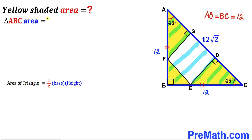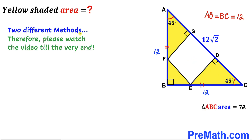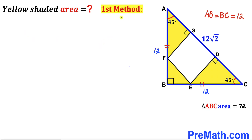So the area of triangle ABC = ½ × 12 × 12 = 72 square units. In this video I'm going to share two different approaches, so please watch to the very end. Here's our very first method.